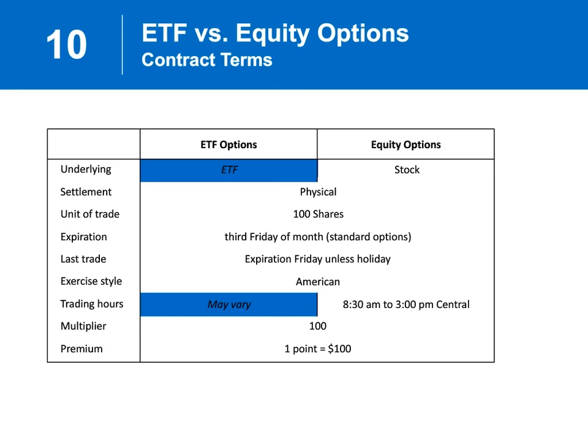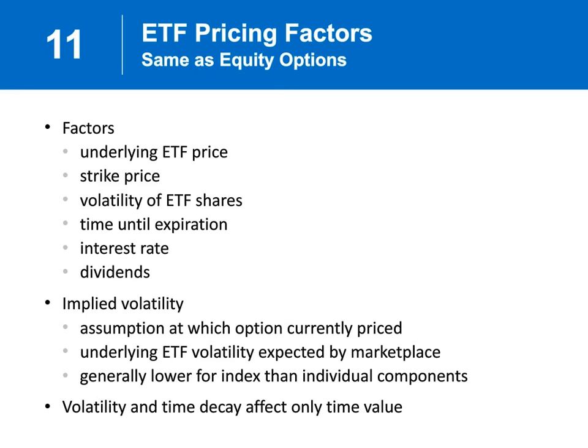In terms of pricing factors, just like regular listed options, we've got the underlying ETF price, that all-important strike price, and the difference between them is very important. Volatility on the ETF shares is one of those pricing factors. There's time to expiration, the cost of money or interest rates, and dividends, if there are any. That implied volatility is the pricing factor that can be most important when it comes to how high or low the time premium is in that option. Finding that implied volatility versus the historic volatility can be done at optionseducation.org, under Tools and Resources, looking for historic and implied vols.